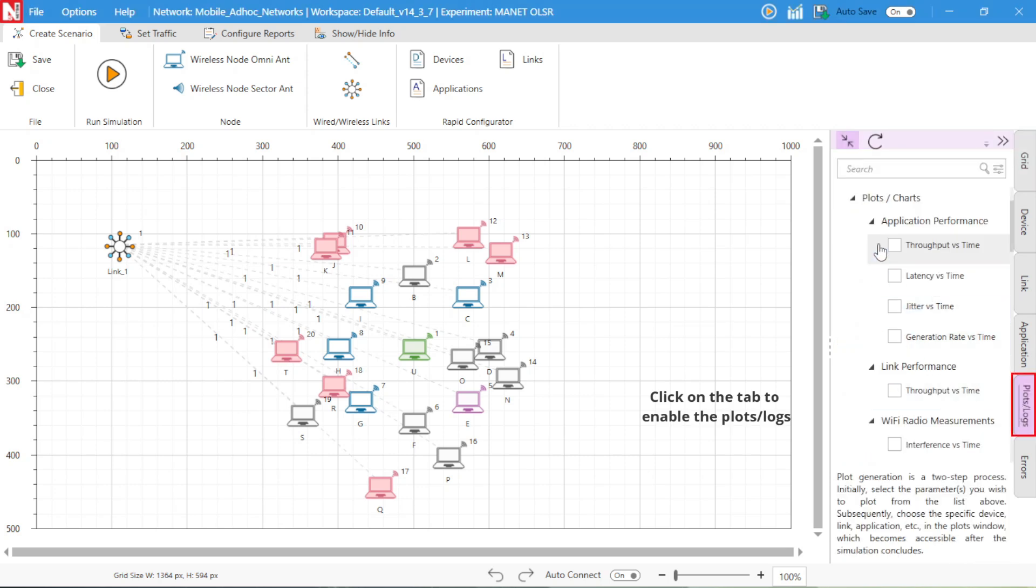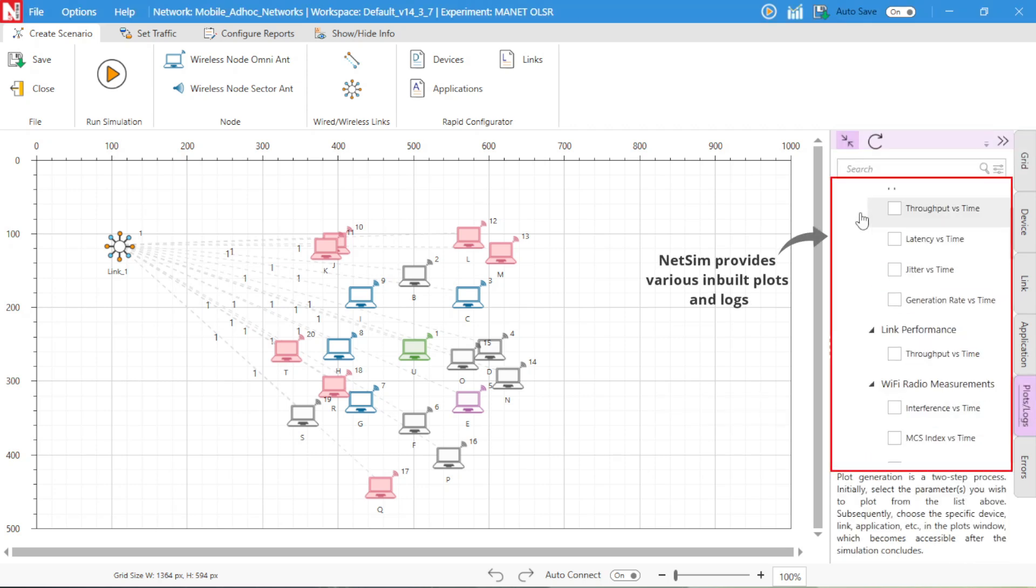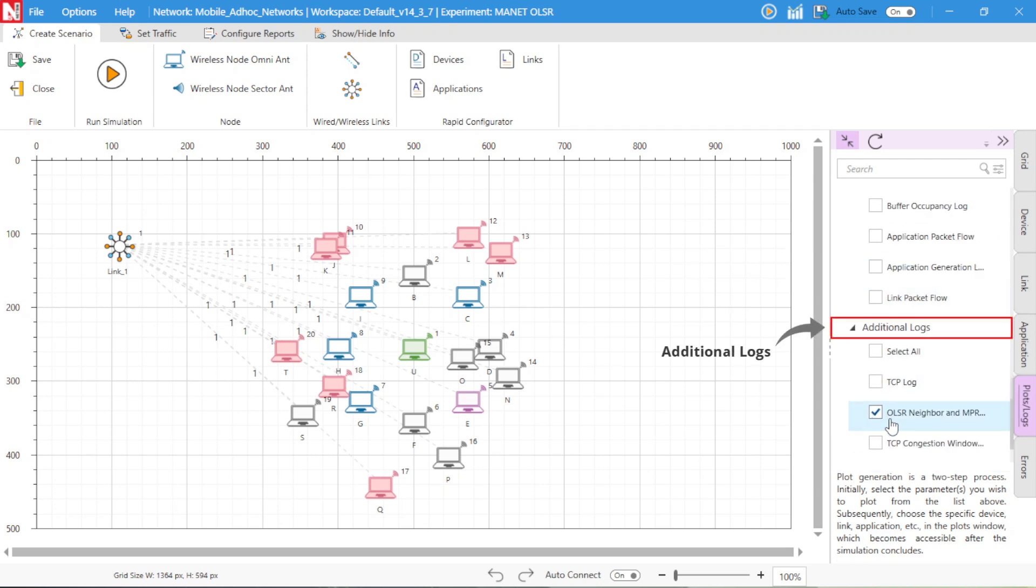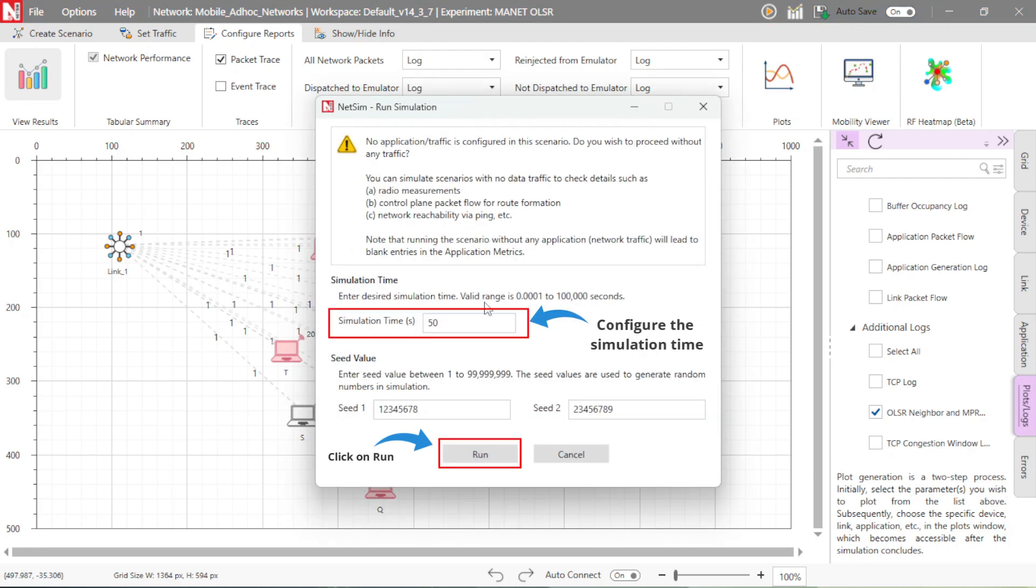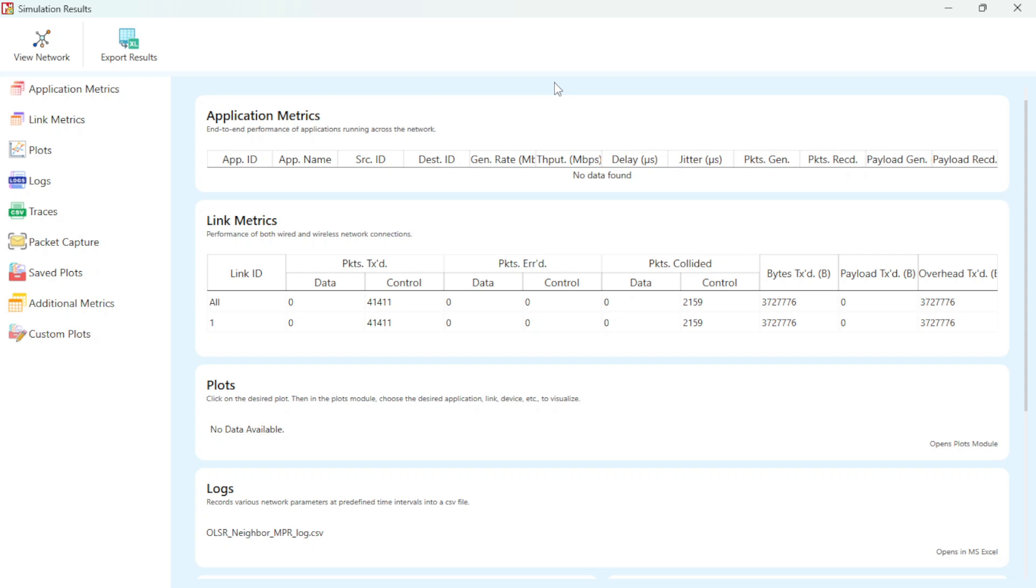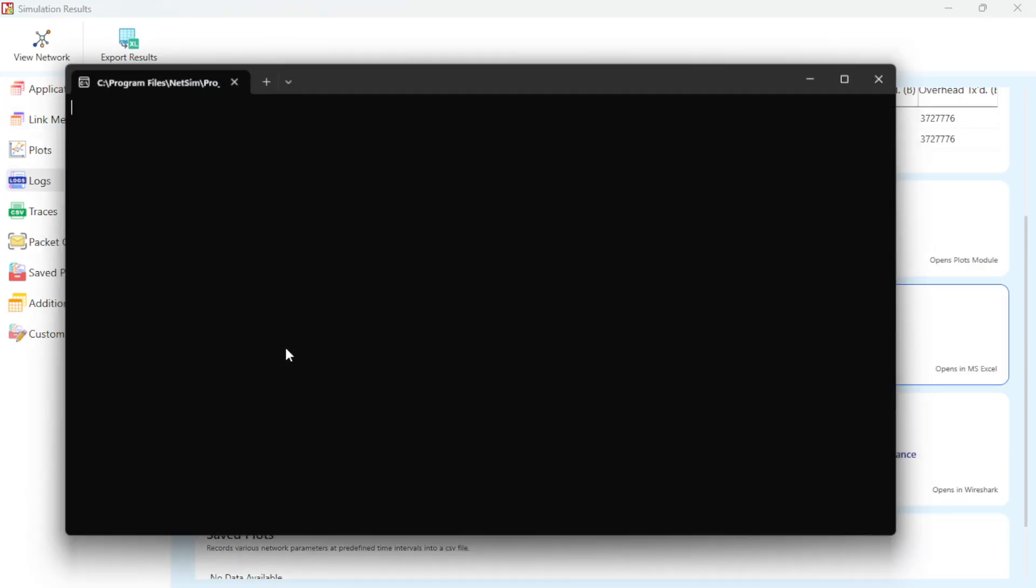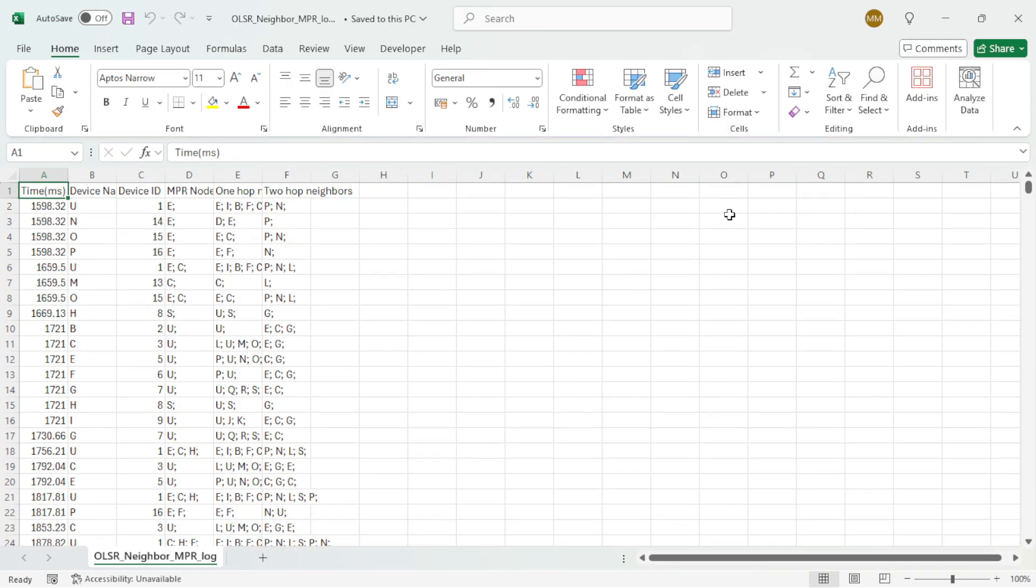Next, click on the Plots/Logs tab in the right side panel. NetSim provides various inbuilt plots and logs. Under the Additional Logs section, we have enabled the OLSR MPR log. Then, click on the Configure Reports tab. As you can see, the Packet Trace option is enabled. Now, click on the Run icon from the Quick Access bar and run the simulation for 50 seconds. Once the simulation is complete, you'll see the results dashboard.